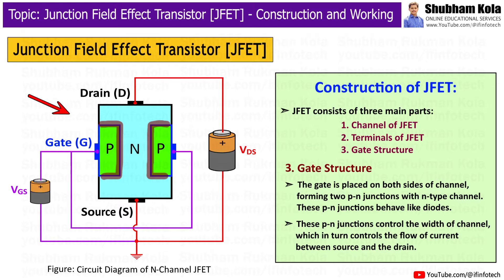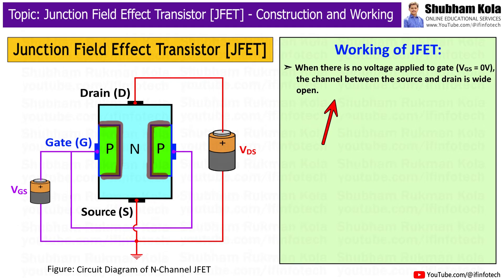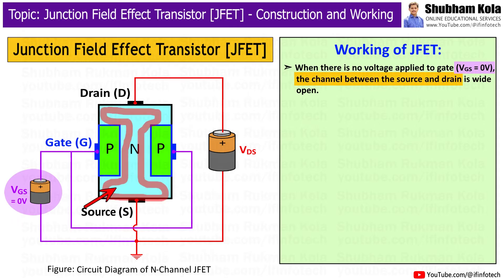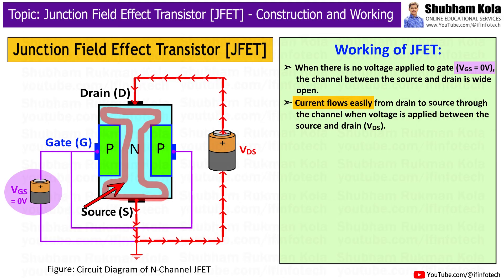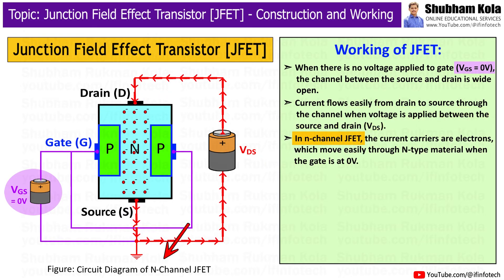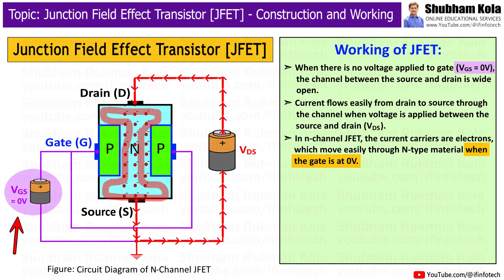Now that we know the basic construction of JFET, let's understand how it works. When there is no voltage applied to the gate, i.e. Vgs = 0V, the channel between source and drain is wide open. The current flows easily from source to drain through the channel when voltage Vds is applied. In an N-channel JFET, the current carriers are electrons which move easily through N-type material when the gate is at 0V.